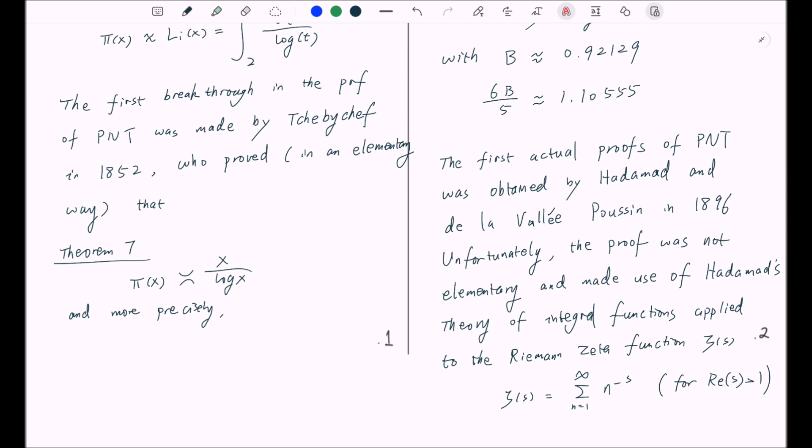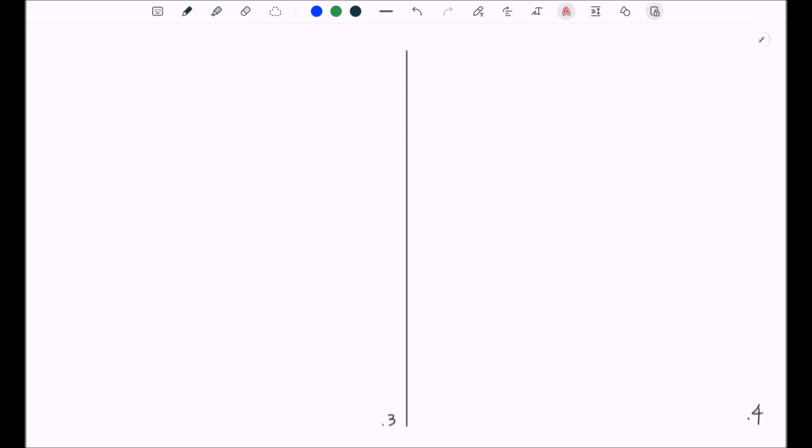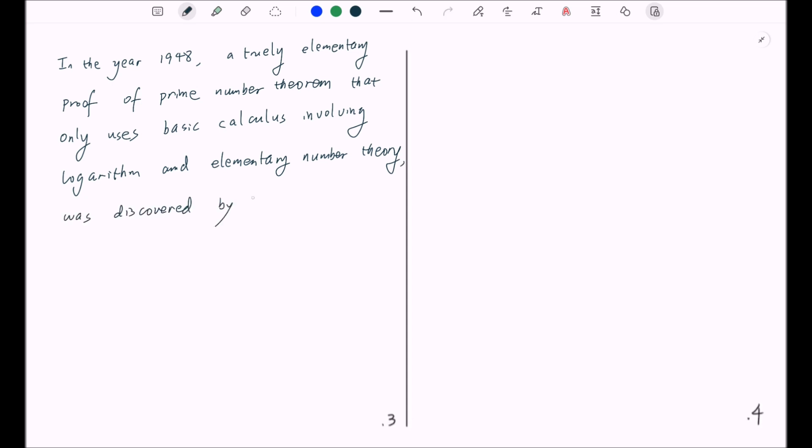And now it comes to the really amazing part. In the year 1948, a truly elementary proof of prime number theorem that only uses basic calculus involving logarithm and elementary number theory was discovered by Erdos and Selberg. However, there was a bitter dispute between these two famous mathematicians, which we will not talk about in this video.